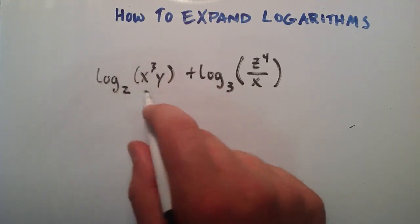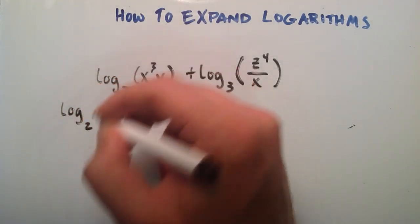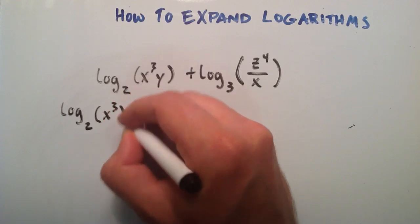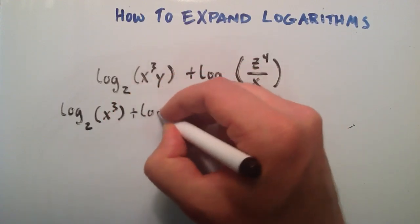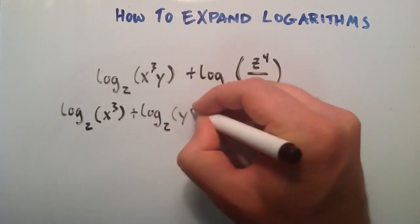So let's go ahead and expand this. So this becomes the logarithm base 2 of the first part, which is our x to the third, plus the logarithm base 2 of the second part, which is our y.